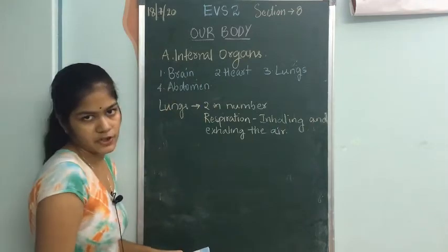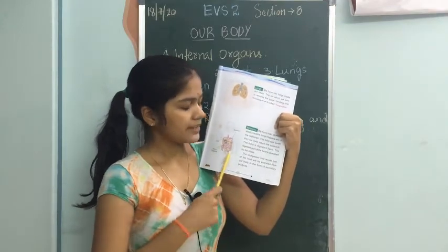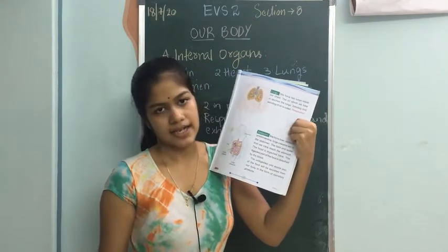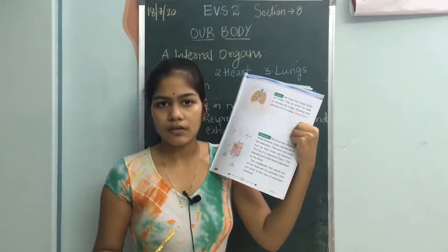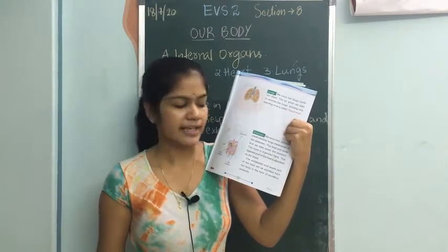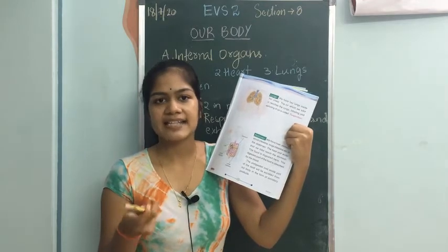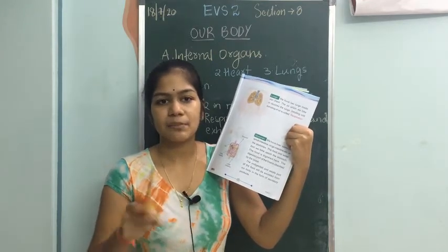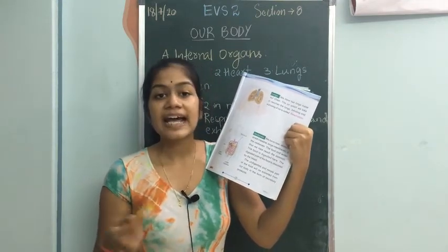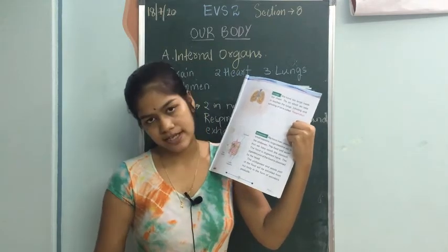Lastly, we have the abdomen. The abdomen contains four important organs: the liver, stomach, small intestine, and large intestine. The food and water which we eat and drink goes into the stomach. In the stomach, the food gets digested. The stomach contains acid that helps in breaking down the food. The digested food is absorbed into the blood, while undigested food is eliminated from the body as excretory products.